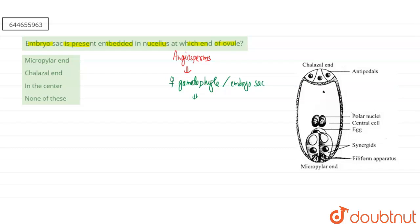or embryo sac is basically oval as well as a multicellular structure. It is oval and multicellular, and this structure is...